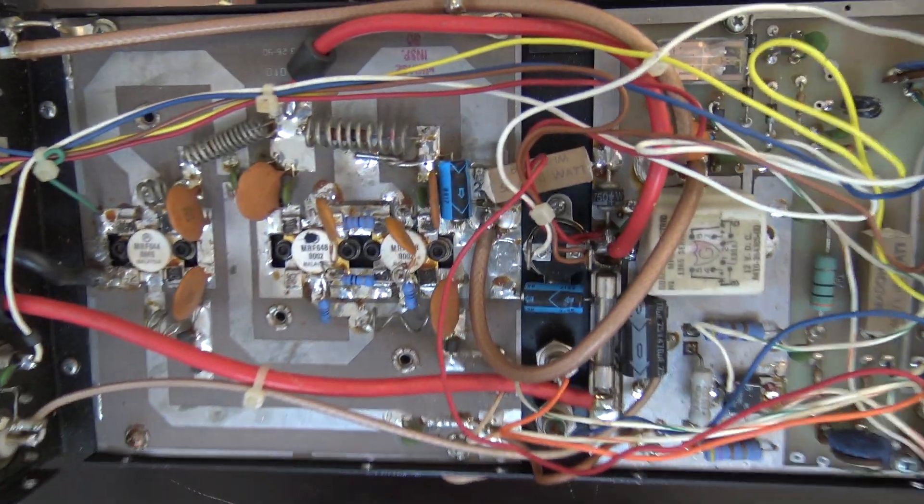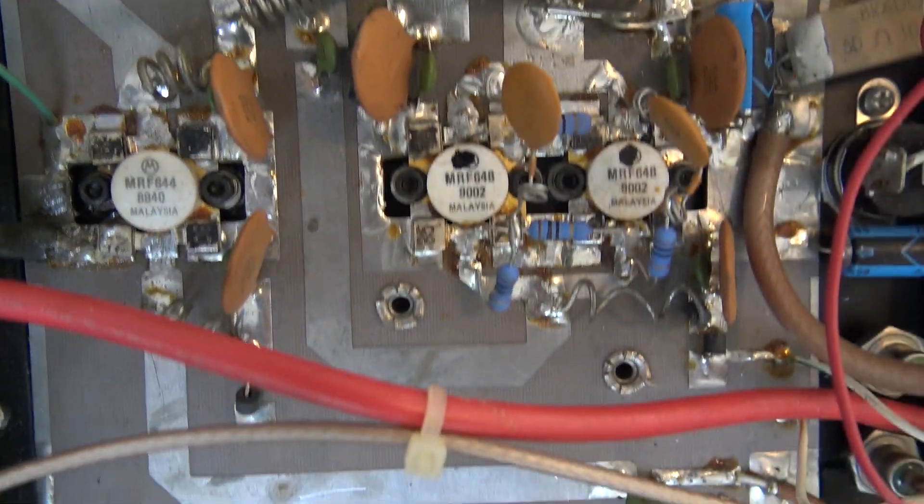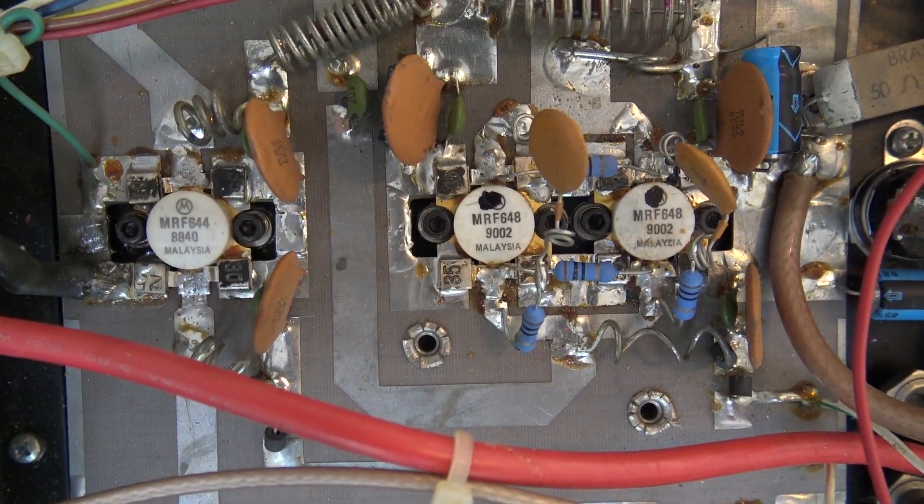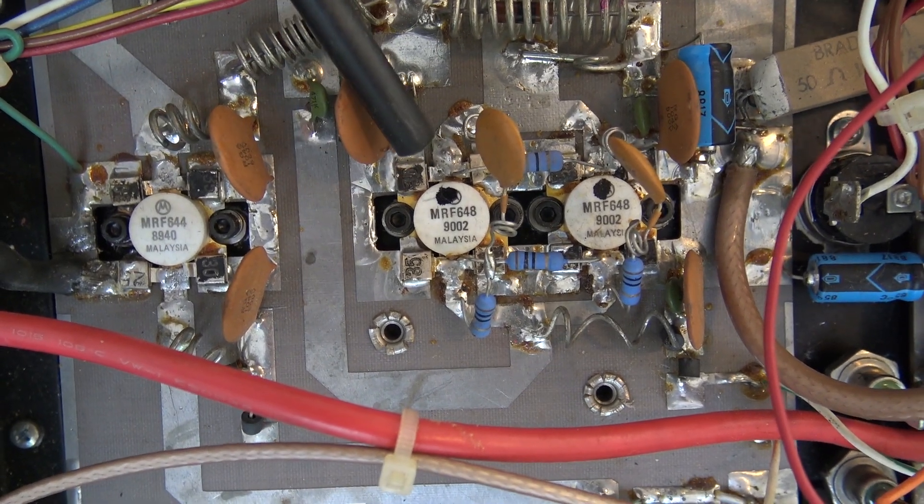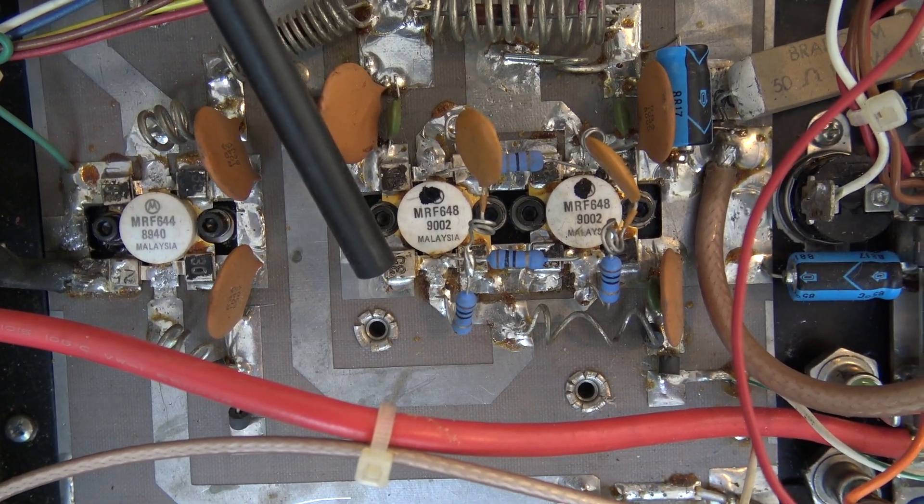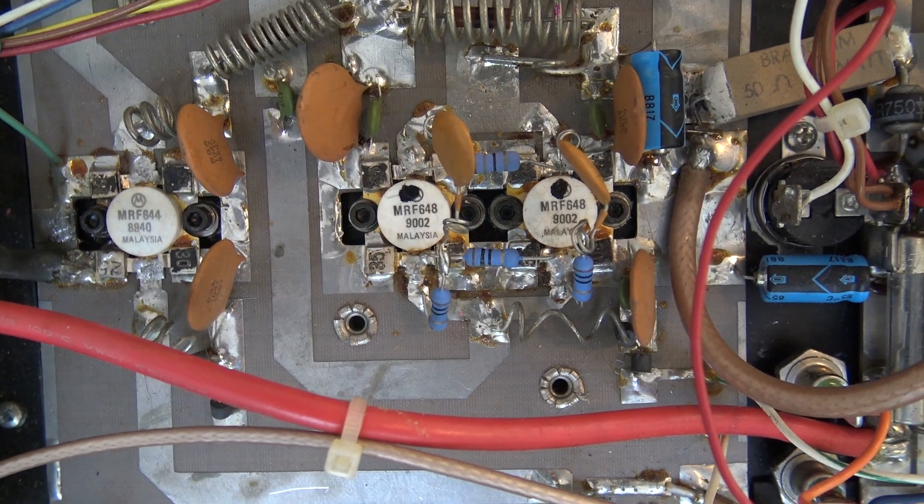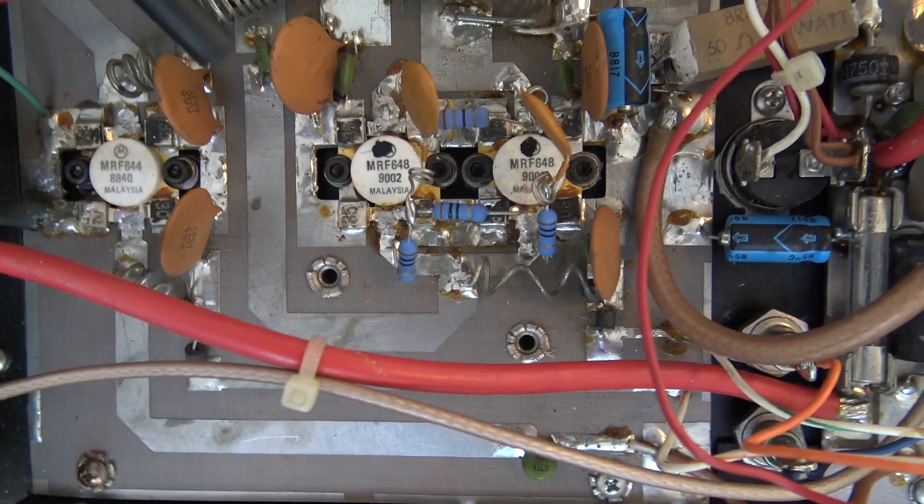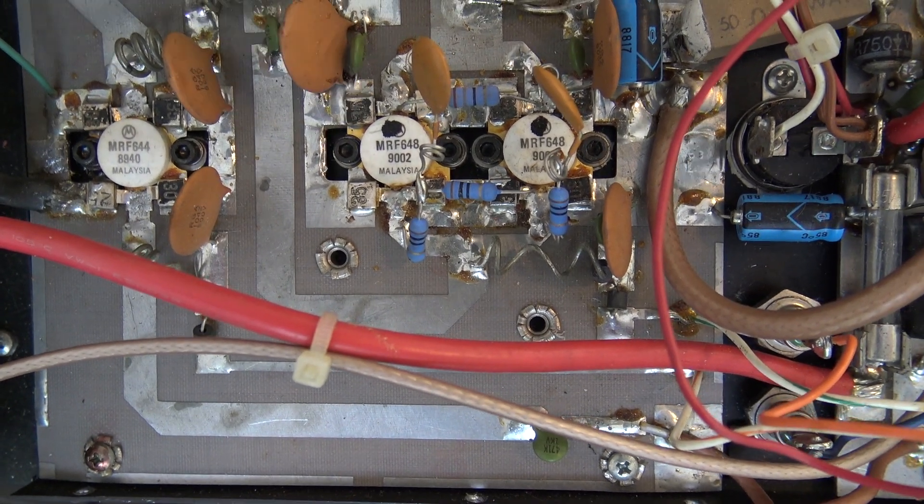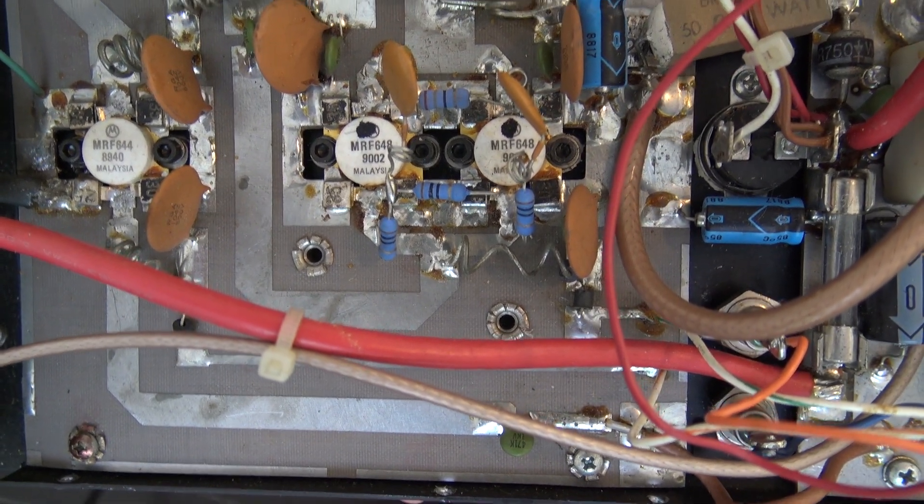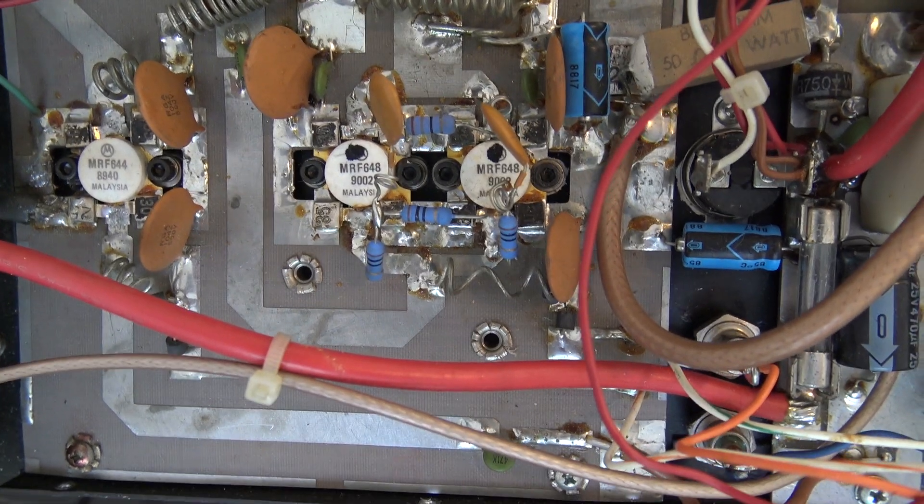Another thing I have a question on is look at those transistors there. Those have what appears to be little capacitors on the legs. And if I were to unsolder these to take these tabs up or take the finals up to test them, do I have to solder those back on? I've never seen anything like that before. Is that something for UHF or VHF amplifiers? I'm not sure. So your comments are welcome below.